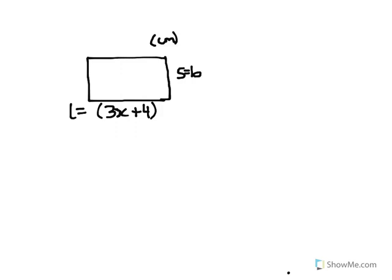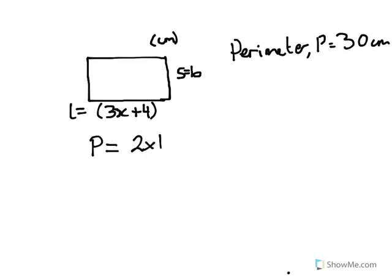But we also know that the perimeter, which we'll call P, is 30 centimeters. We know that the perimeter can be written as 2 times the length plus 2 times the breadth.